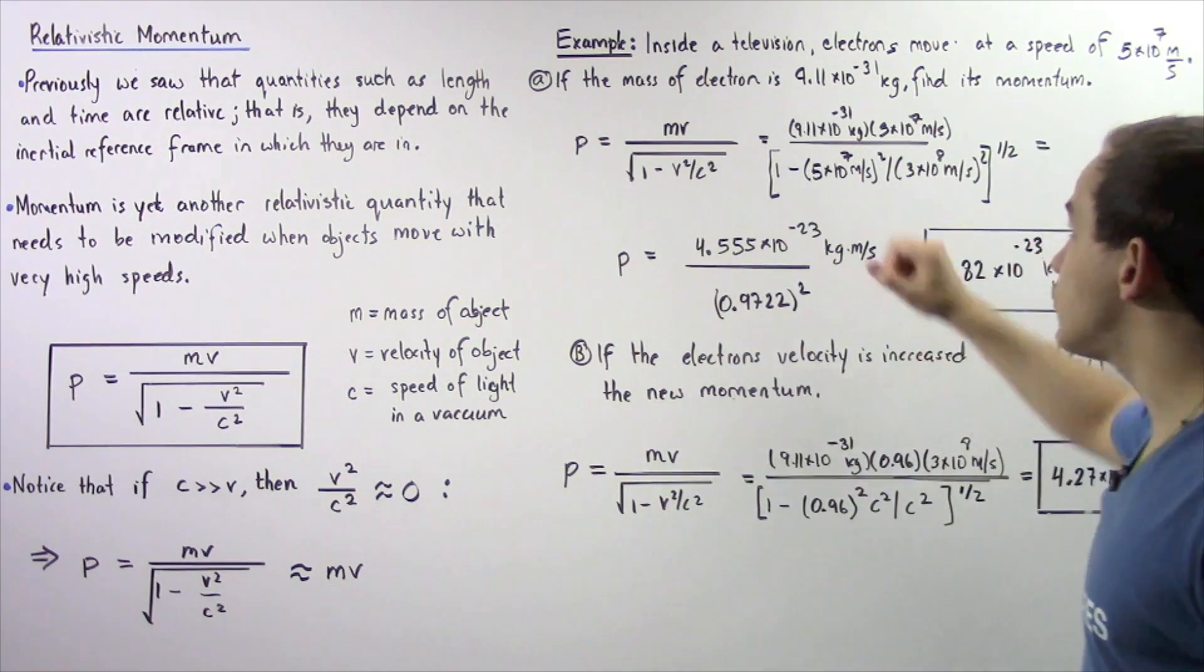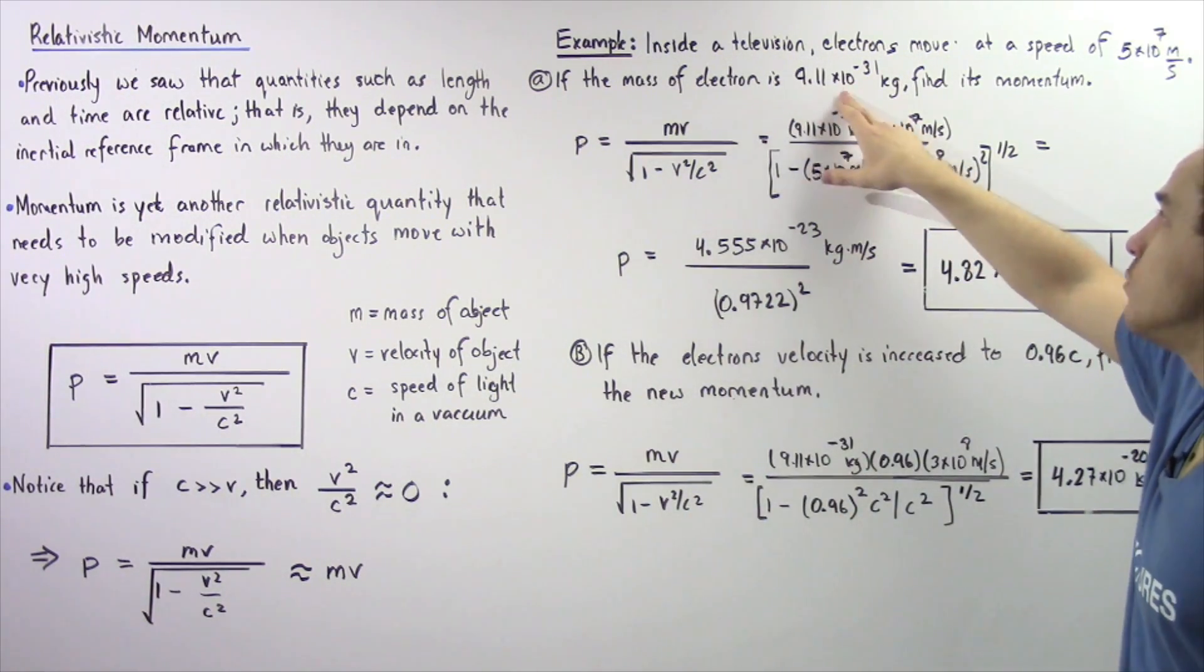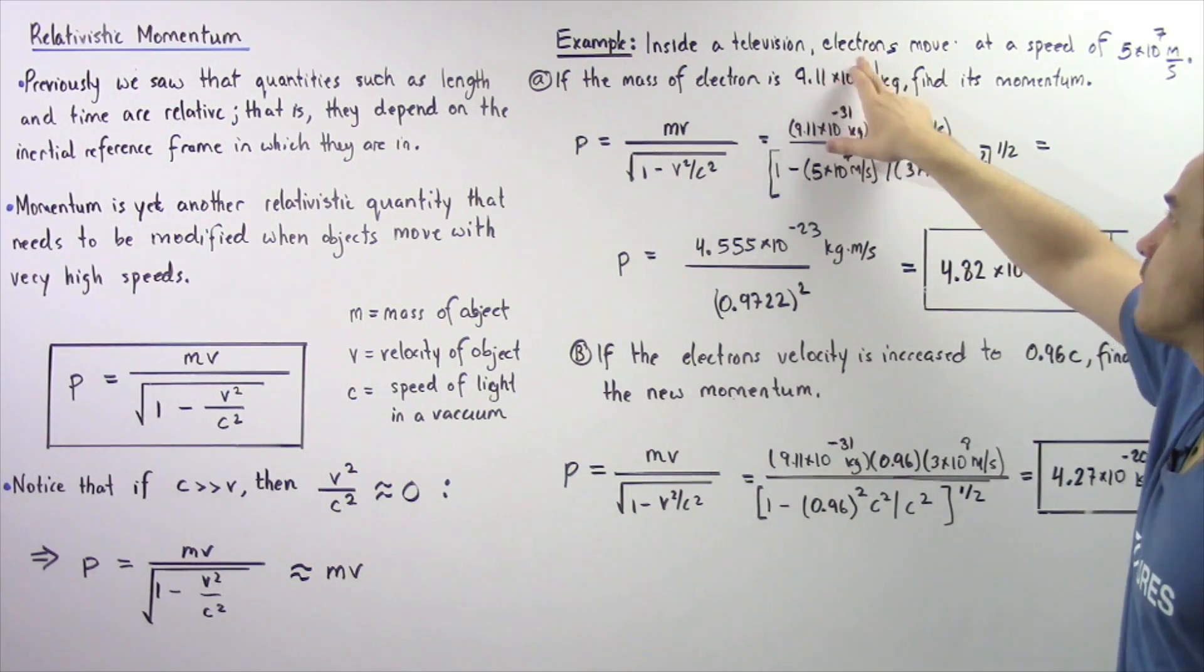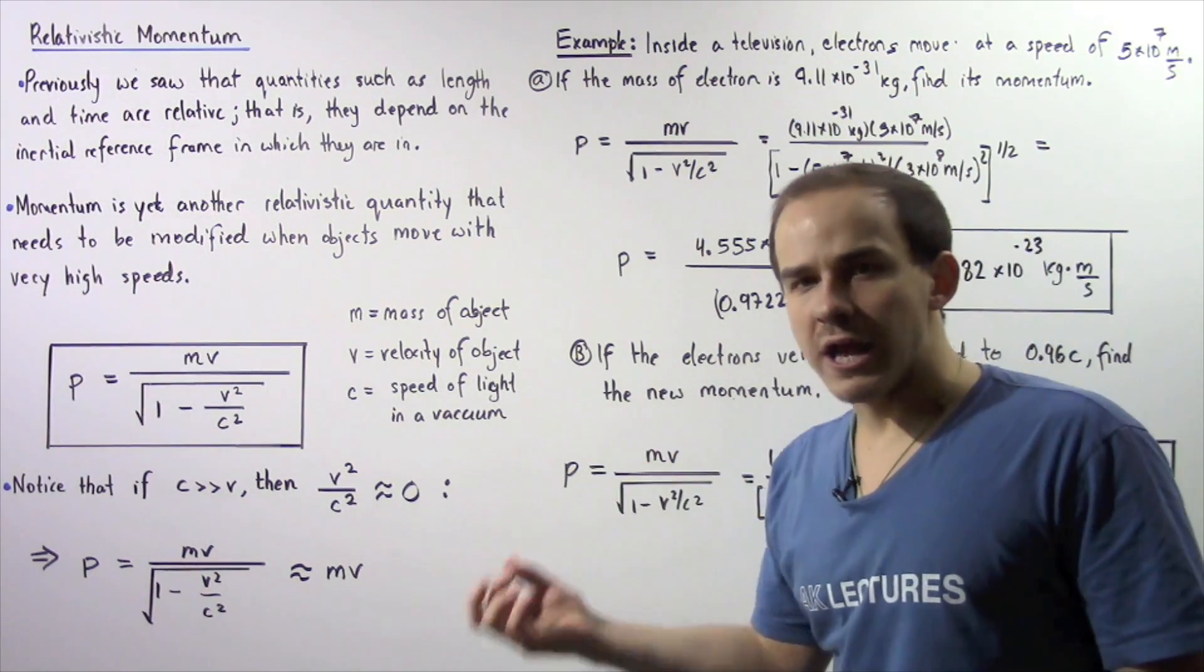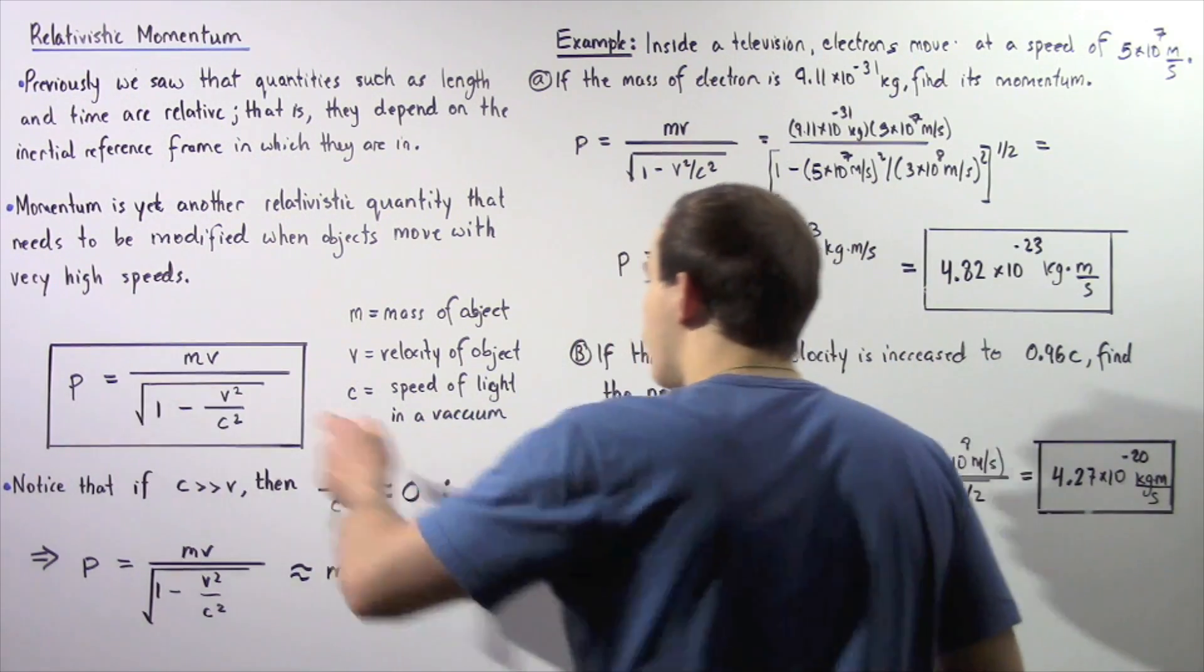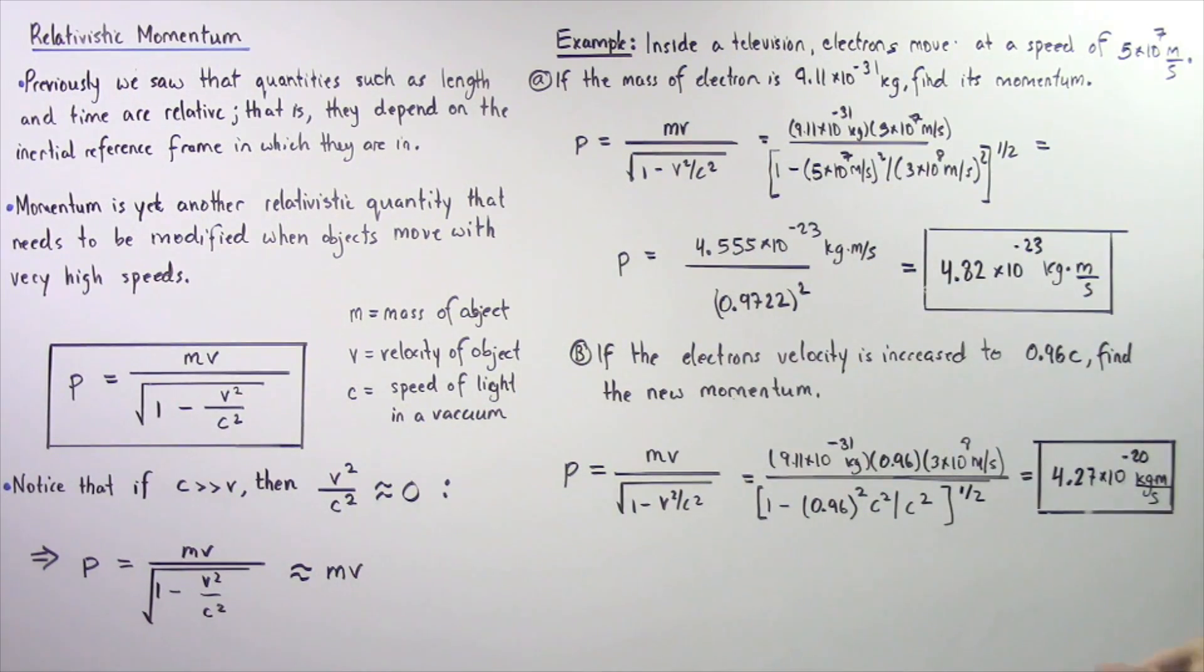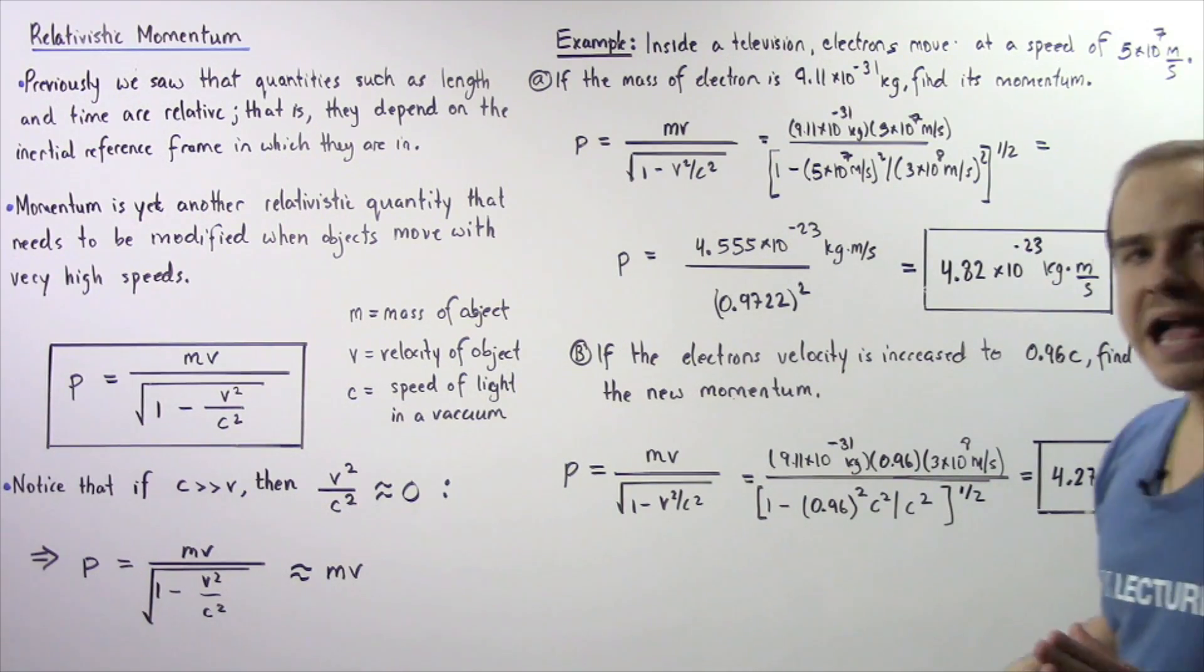9.11 times 10 to the negative 31 kilograms, find the momentum of our electrons. We apply this equation, we plug in our values, and we get about 4.82 times 10 to the negative 23 kilograms multiplied by meter divided by seconds.